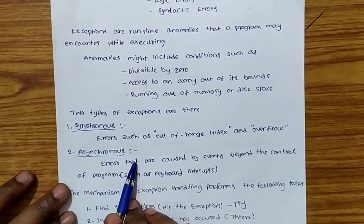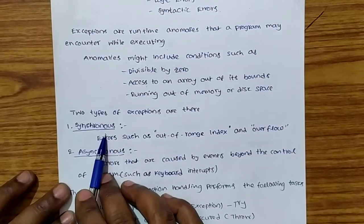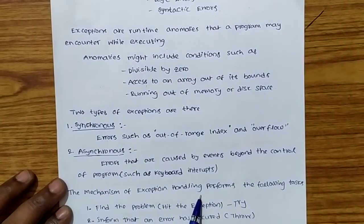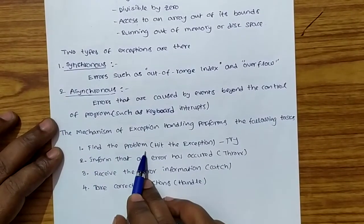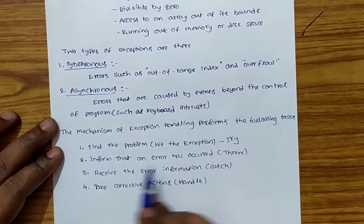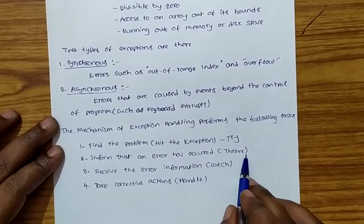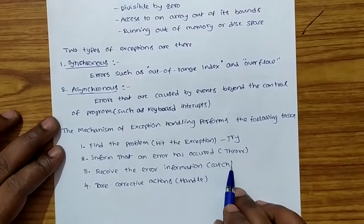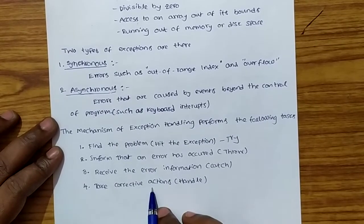Exception handling mechanism is used to handle synchronous exceptions. It performs the following four tasks: first, find the problem or hit the exception — the key term is 'try'; second, inform that an error has occurred — 'throw'; third, receive the error information — 'catch'; and fourth, take necessary corrective actions — 'handling'.